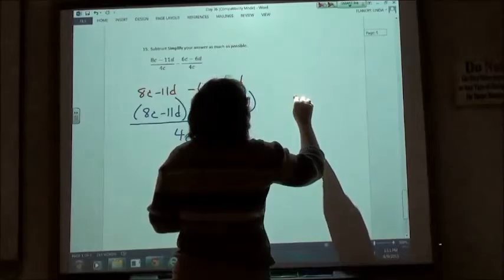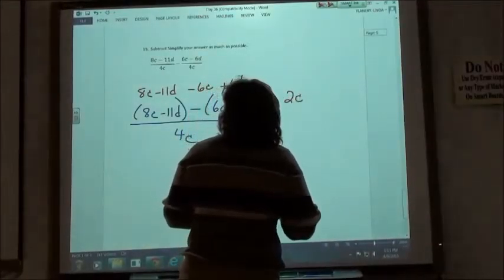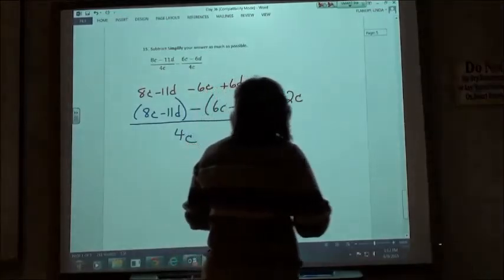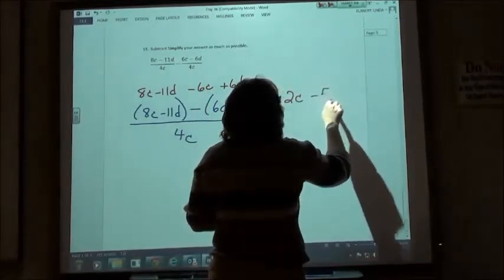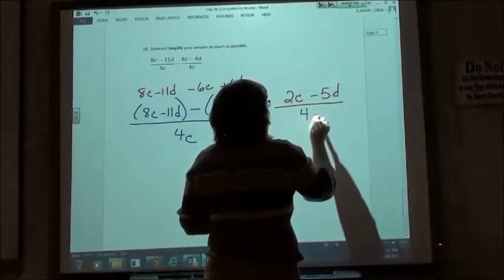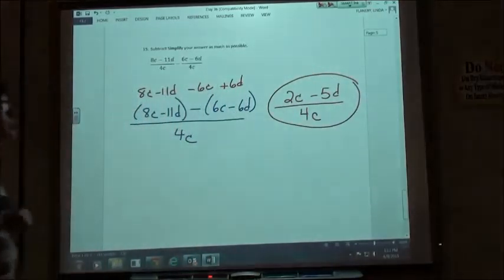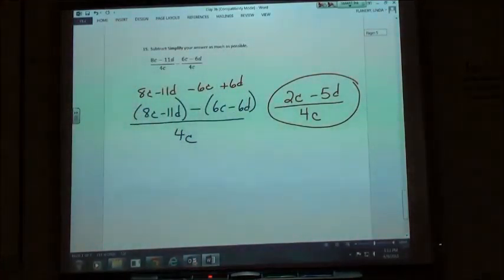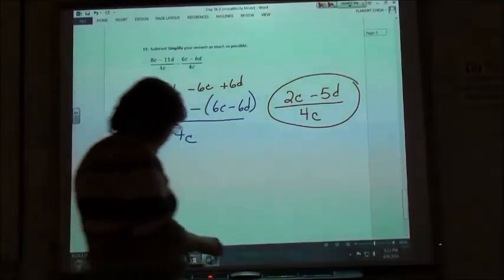8 minus 6 would be a positive 2c. And negative 11 plus 6 would be a negative 5, negative 5d over 4c. And again, I can't reduce that one because all three of my terms are not divisible by the same thing, so that's going to be my answer as simplified as I can do it. Alright, so that will be the next one.